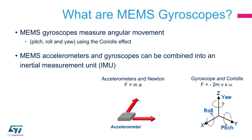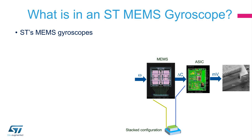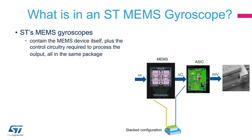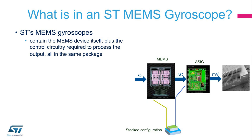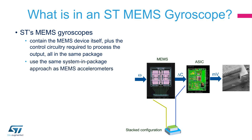Accelerometers and gyroscopes can be combined to create an inertial measurement unit, or IMU. An ST MEMS gyroscope combines the MEMS sensor itself and an ASIC to process the sensor output, integrated in a single micromachined structure. To achieve a very high level of integration, ST uses a system-in-package approach, where the ASIC part is stacked on top of the MEMS structure.